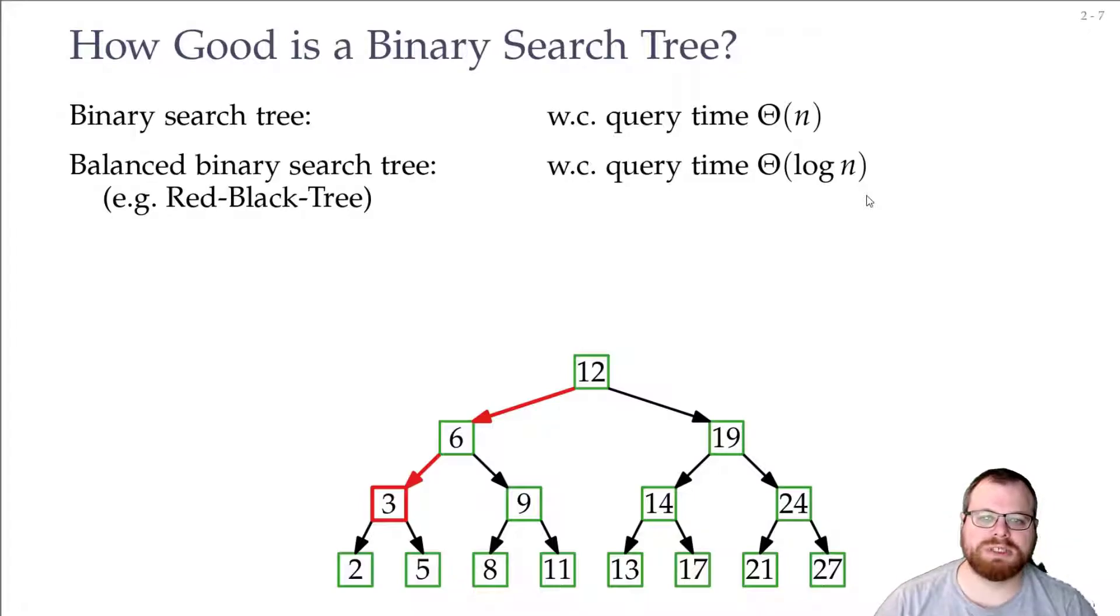And that is usually what we use to analyze how good something is, we look at the worst case. And you probably also all know that this is optimal, so it is not possible to get a binary search tree where we get a better query time for any input.